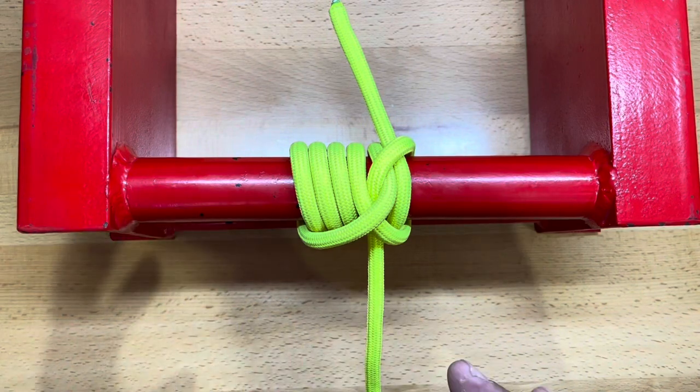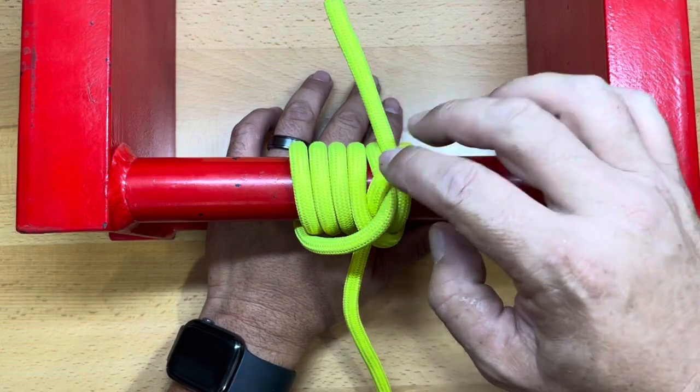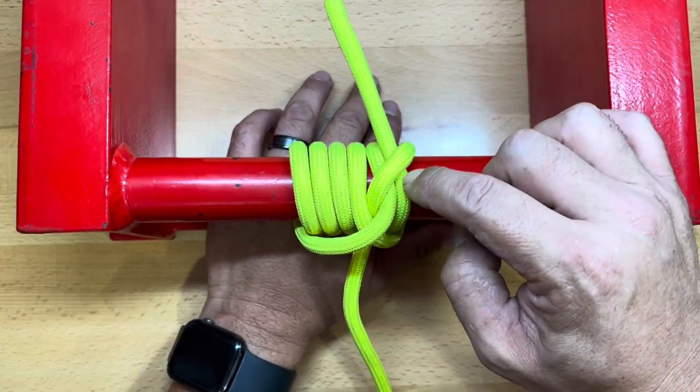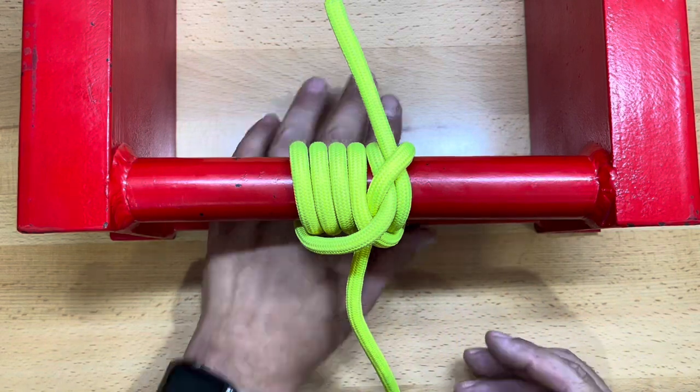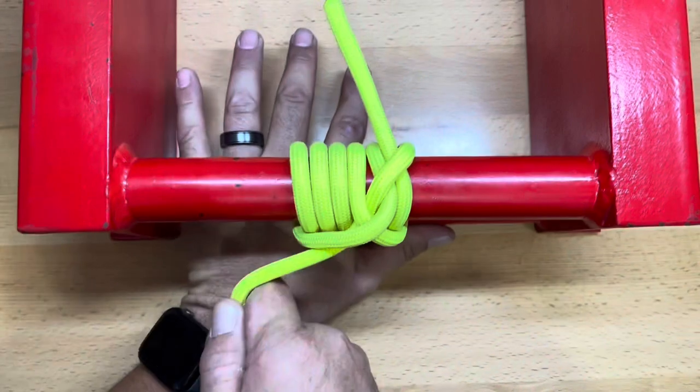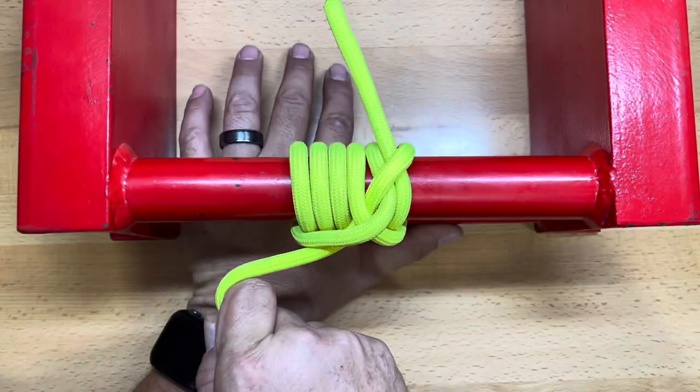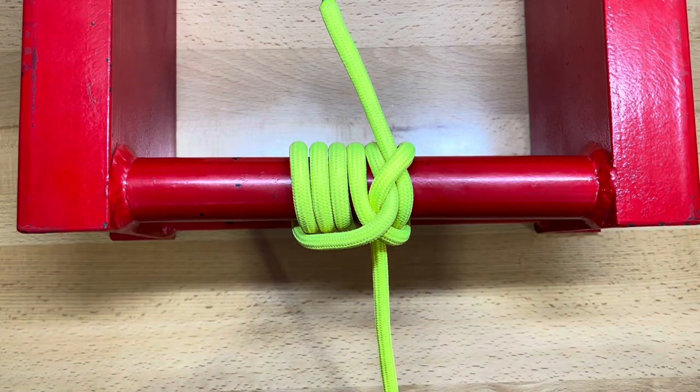So once this tightens down, again, you have two locks here or one lock that locks down two sides of the, or two places on the working end of the rope, you have the multiple wraps, which add friction to resist the side to side movement, thereby keeping the knot on the rail where you put it.